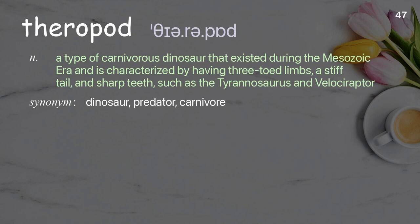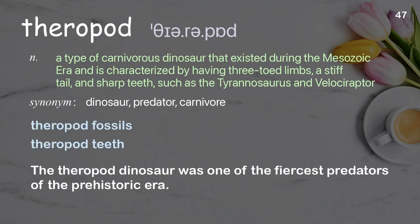Theropod: a type of carnivorous dinosaur that existed during the Mesozoic era, characterized by having three-toed limbs, a stiff tail, and sharp teeth, such as the Tyrannosaurus and Velociraptor. Examples: theropod fossils, theropod teeth. The theropod dinosaur was one of the fiercest predators of the prehistoric era.